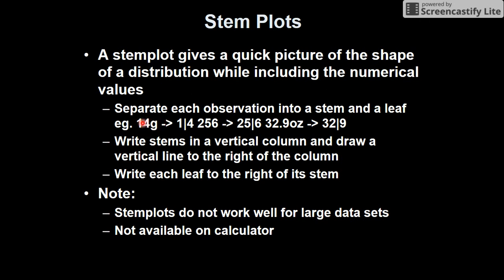So 14, for instance, becomes 1 on one side and 4 on the other side. And 256 will become 25 and 6. We write the stems in a vertical up and down column and draw a vertical line to the right of the column. Write each leaf to the right of its stem.